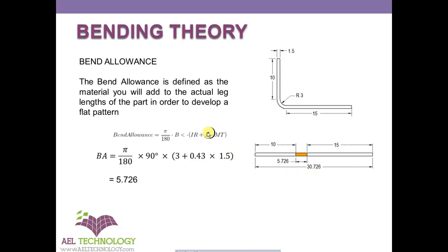Let's look at this example. The figure here has different leg lengths of 10 and 15, and we have a radius of R3 and material thickness is 1.5.